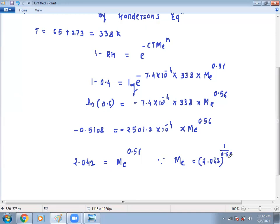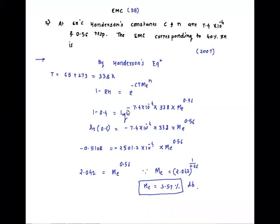Using 2.042 to the power 1 divided by 0.56 gives 3.57, so ME equals 3.57%. This is the moisture content — 3.57% dry basis. So now all the concepts are clear. We will see more in the next lecture. Thank you one and all. You can pause this video and take a screenshot or write in your notebook. I hope you understood today's both examples. Thank you.